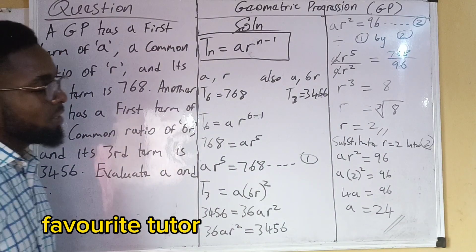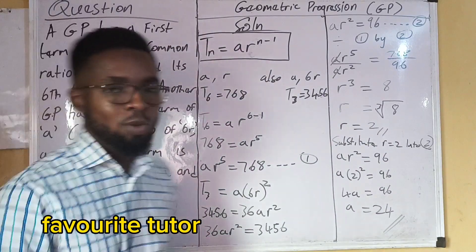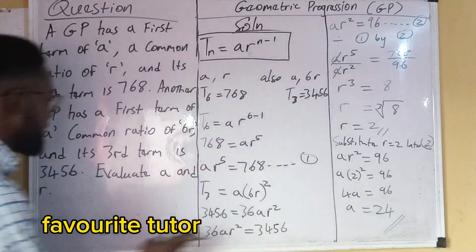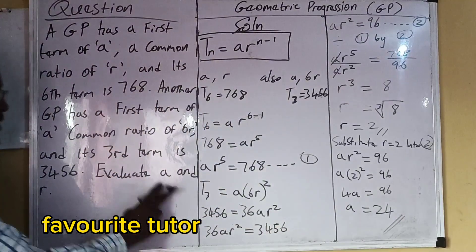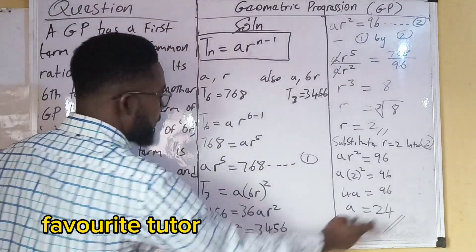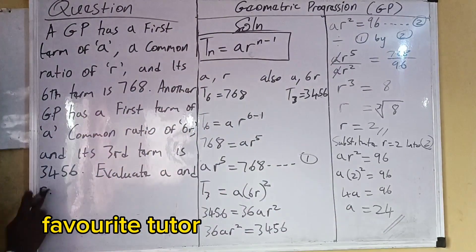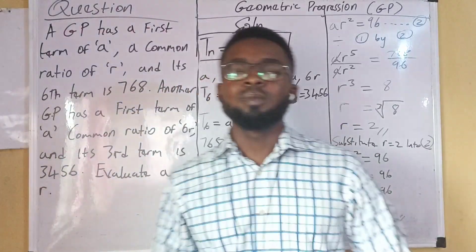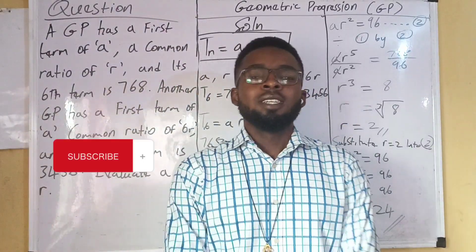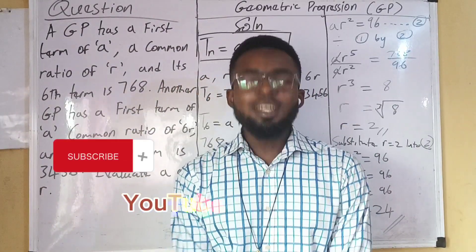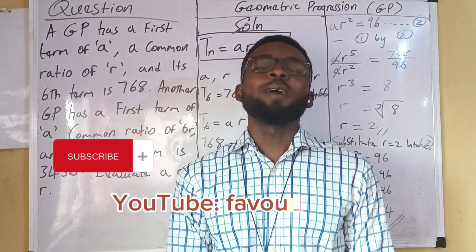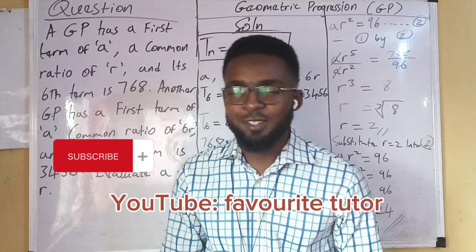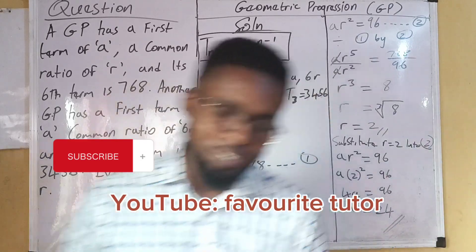Ladies and gentlemen, we've come to the end of this episode. We just found out: A is 24 and R is 2. Please don't forget to subscribe to my YouTube channel. God bless you. Thank you.